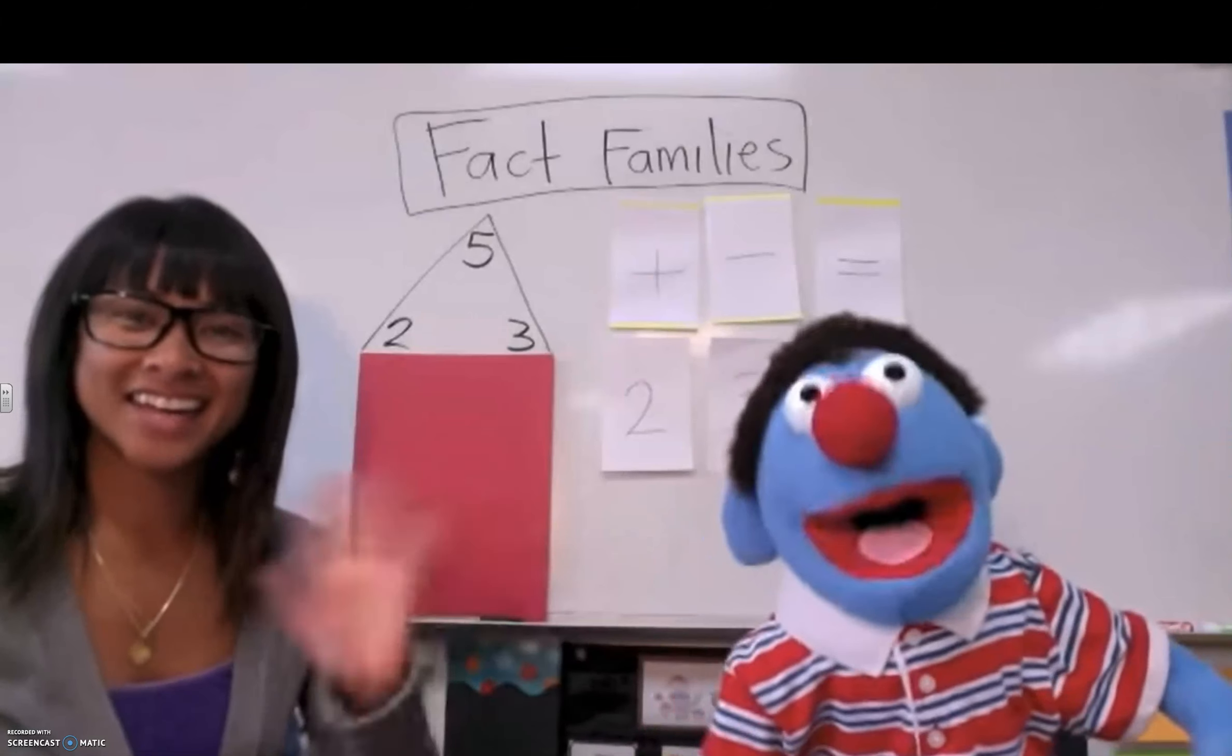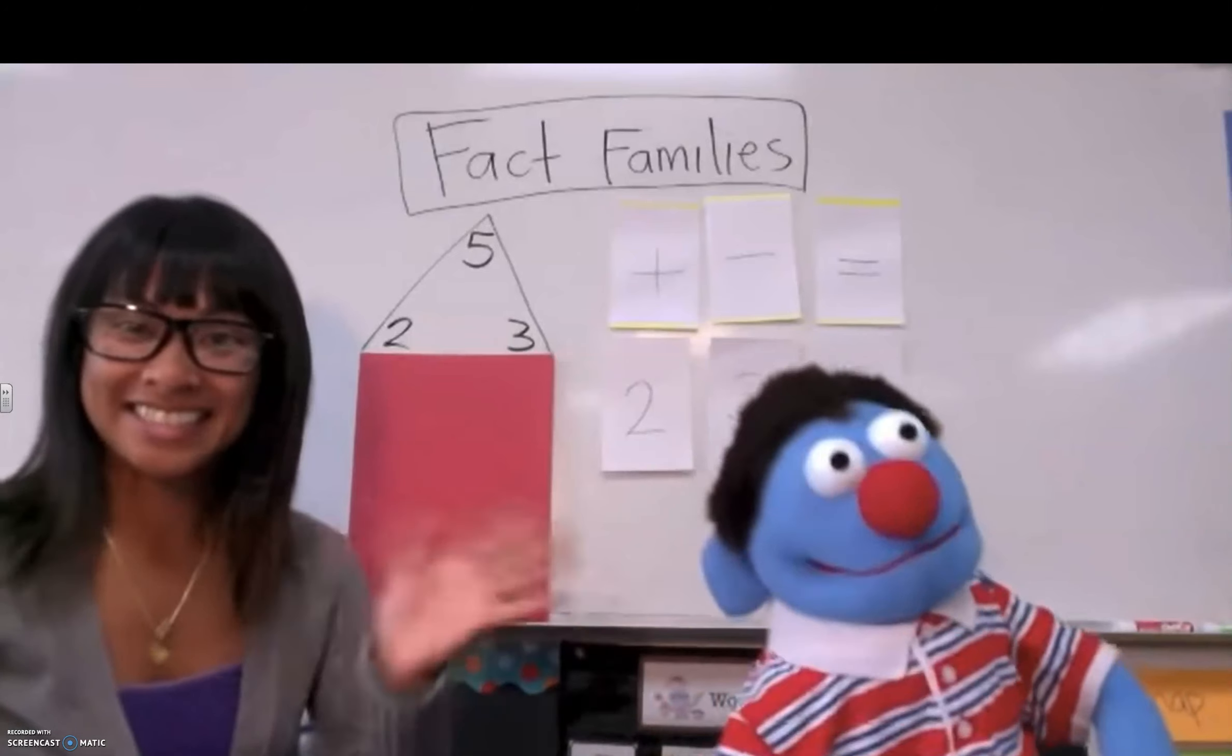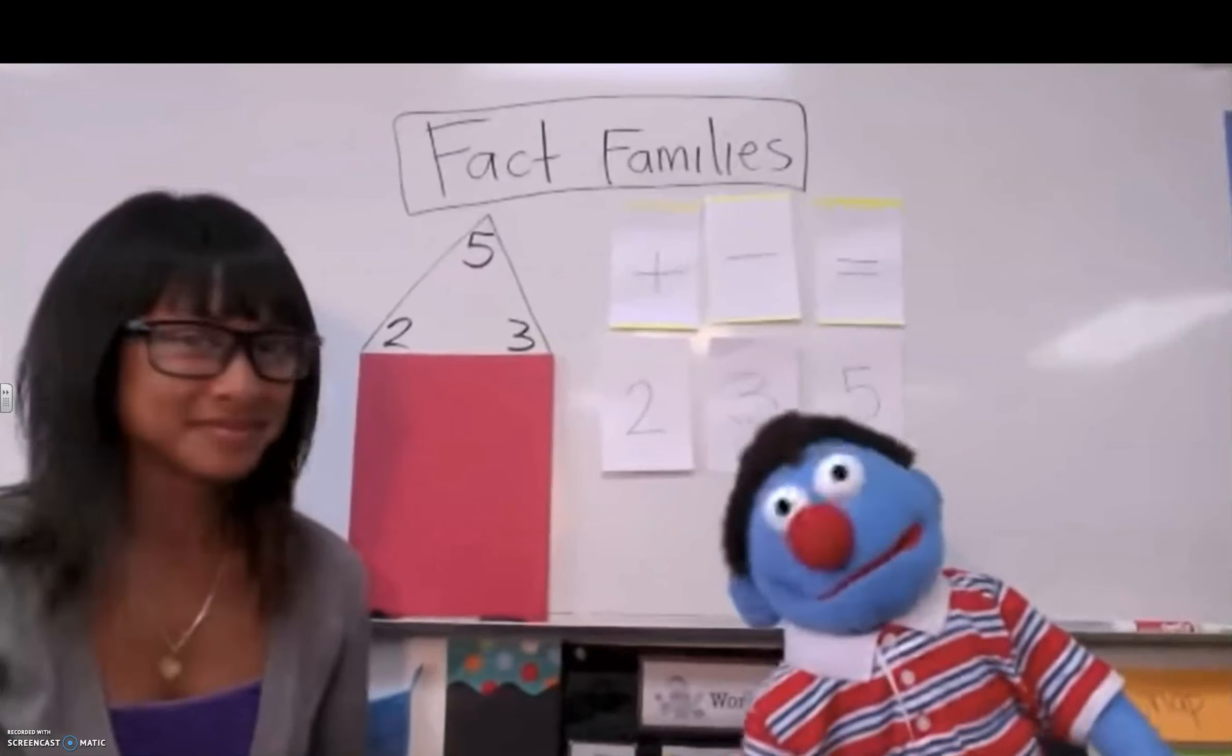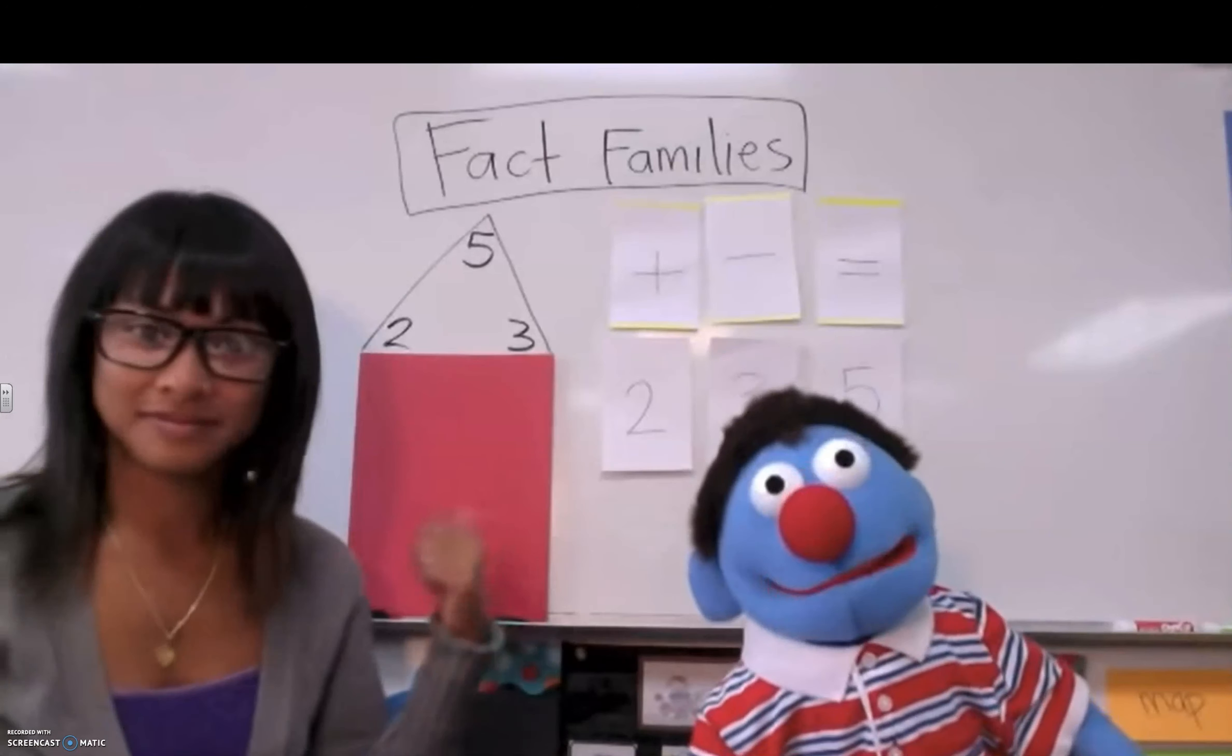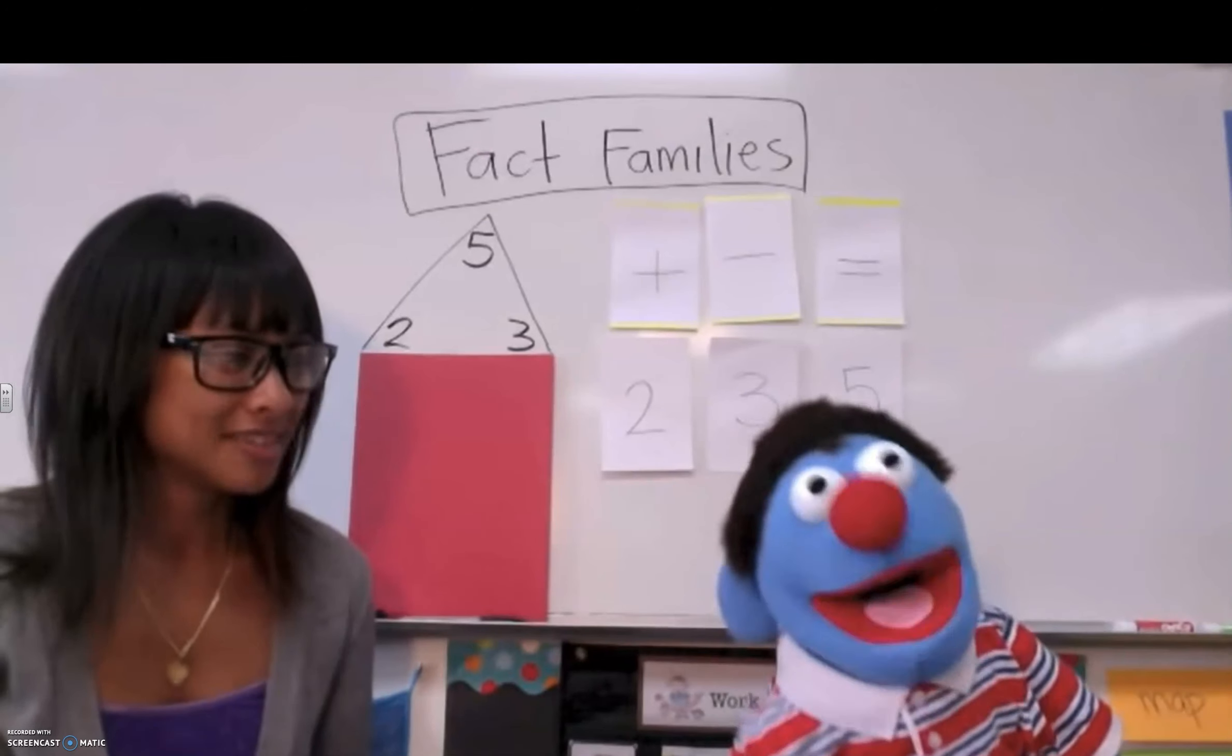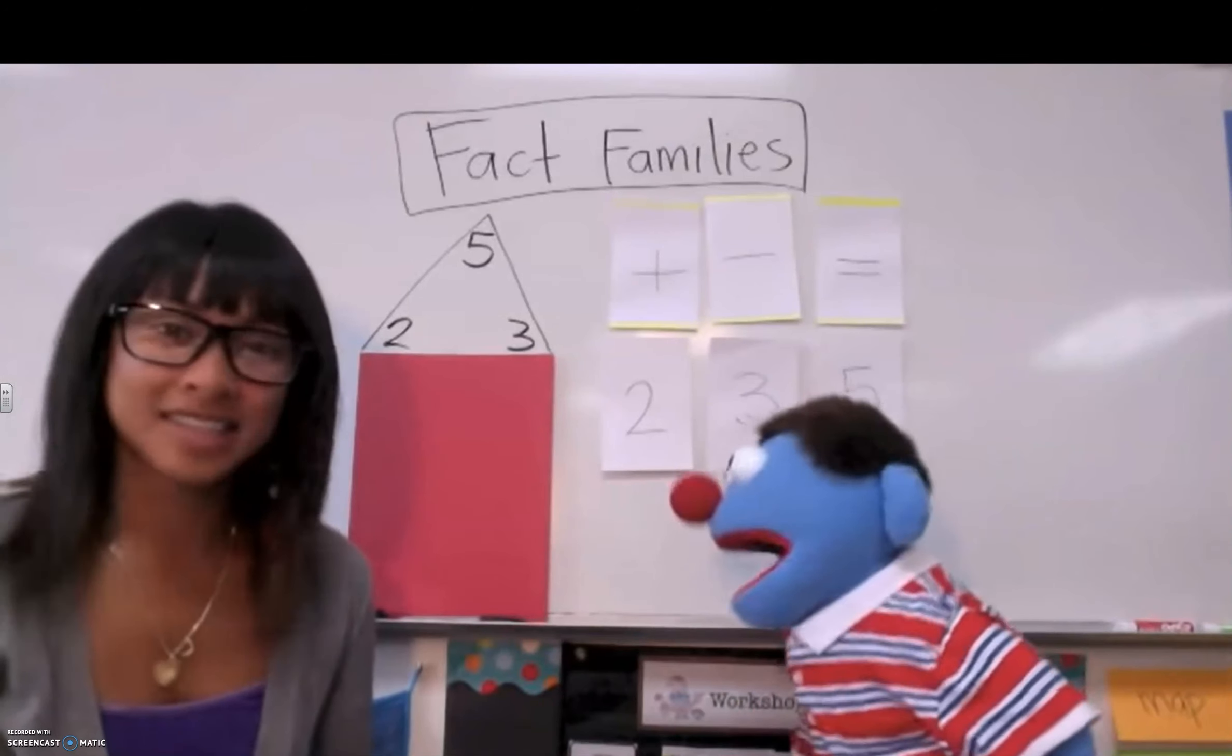Hey everybody, I'm Kai, this is my friend Chris, and this is another Math Minute. Hey Chris, what's that on the board? It looks like a house. It is a house. It's called a fact family house. Oh, I see.